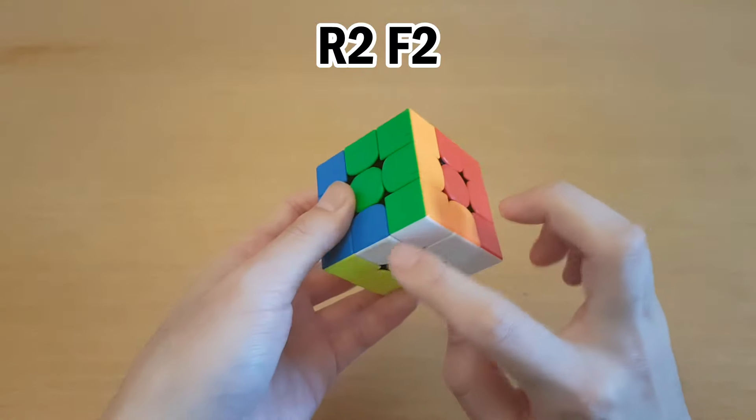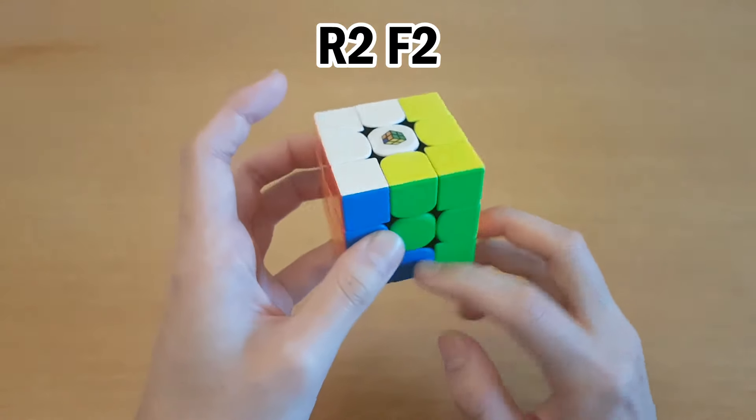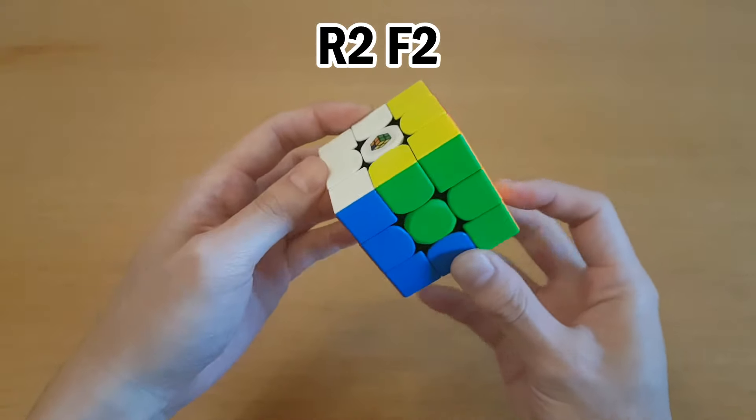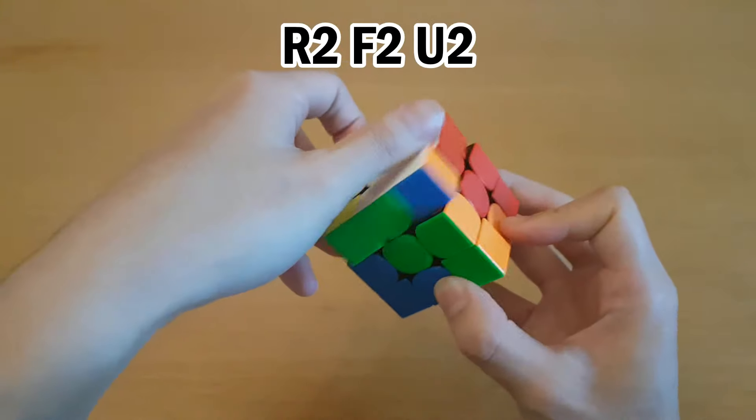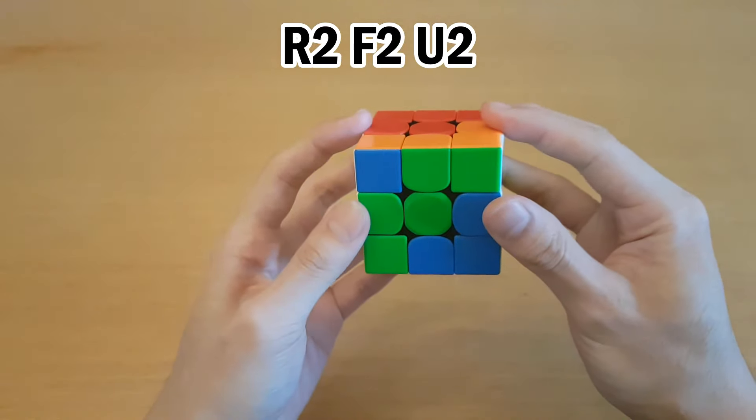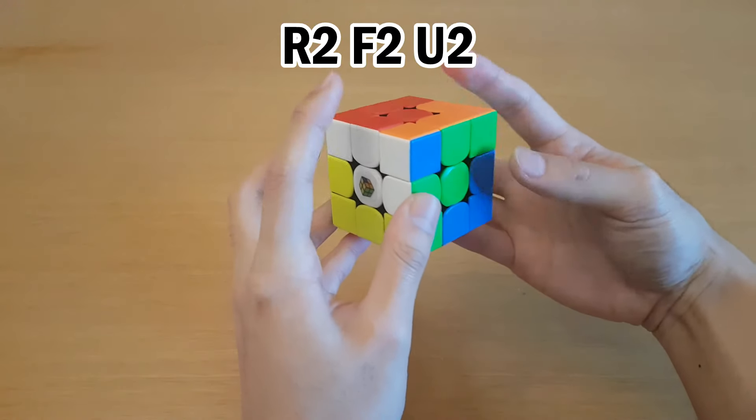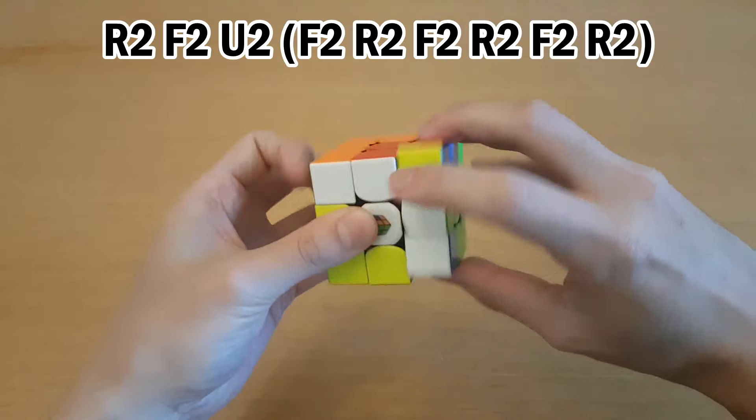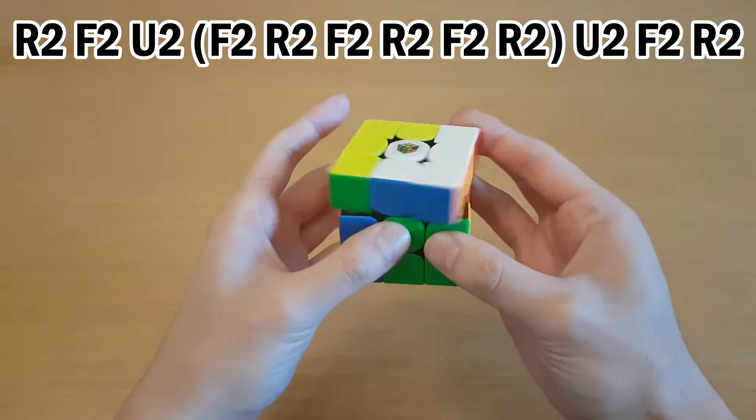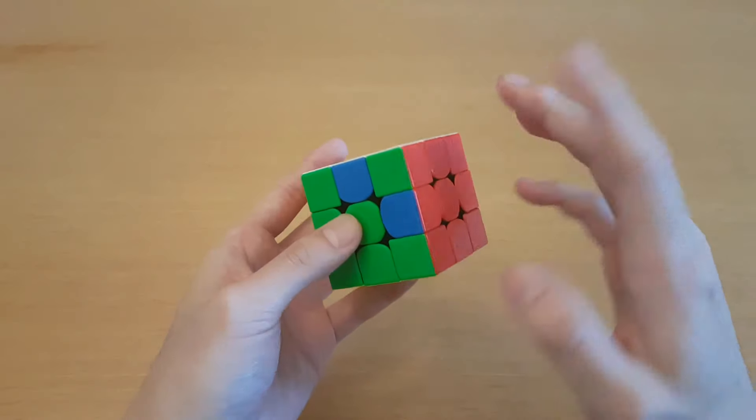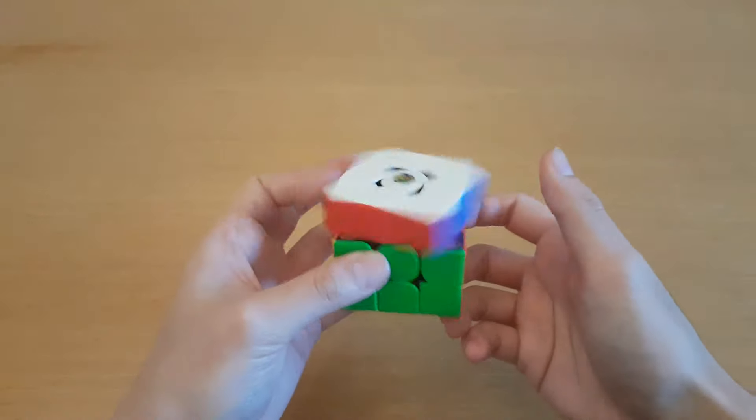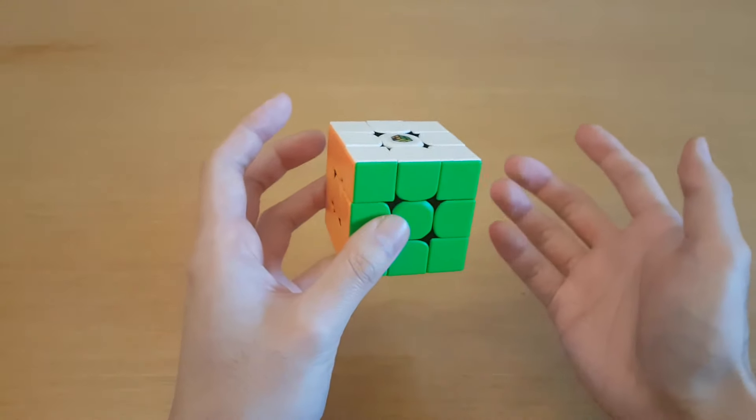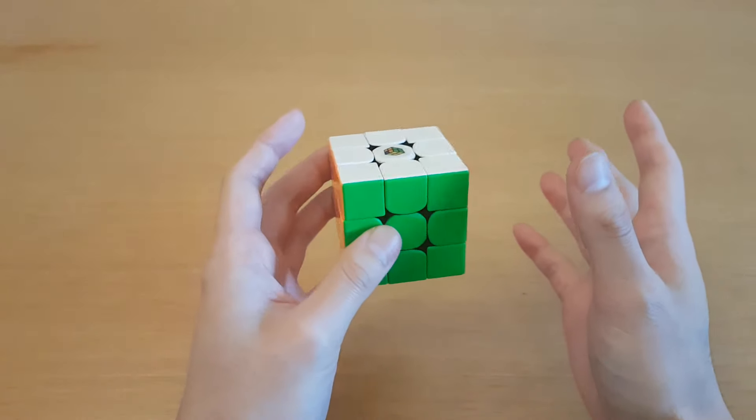You can do R2 F2 to move these two into the bottom, and then now we have two here and two here. So you can just do U2, oops, U2, and now they're set up in the right place. You just have to remember how to undo that, but now we're going to do the algorithm that swaps these, and then undo the setup moves. So just using this one algorithm and clever setup moves, or using the algorithm more than once, you can pretty much solve any case you run into at the end.